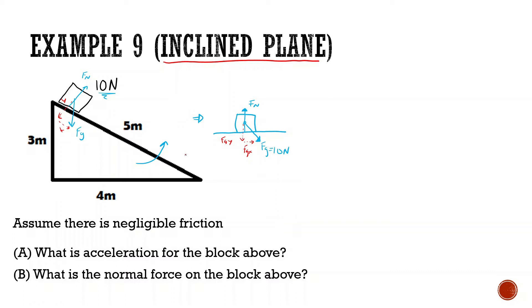Now let's figure out what this angle is right here. I'm going to do tan inverse equal to opposite 3 over 4 adjacent. And then we get the angle: 3 divided by 4 gives us 36.87 degrees. Now geometrically, that same angle here is the same angle right here, so this is also going to be equal to 36.87 degrees.